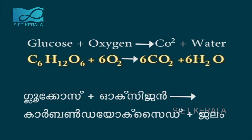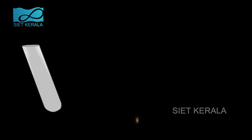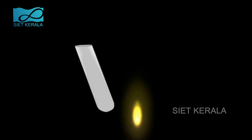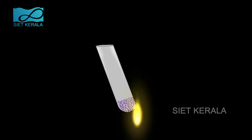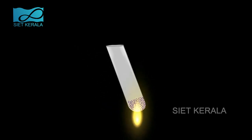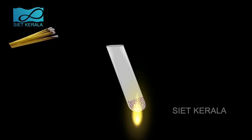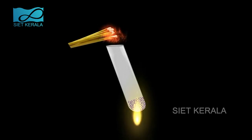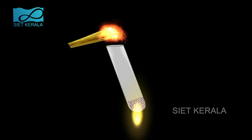Now let us produce oxygen. Take potassium permanganate powder in a test tube and heat it. Place a glowing agarbathi (incense stick) into this test tube to identify the gas formed — you can see that it is burning. The agarbathi burns due to the presence of oxygen. From this we understand that oxygen helps burning: combustion is a process in which a substance reacts with oxygen.